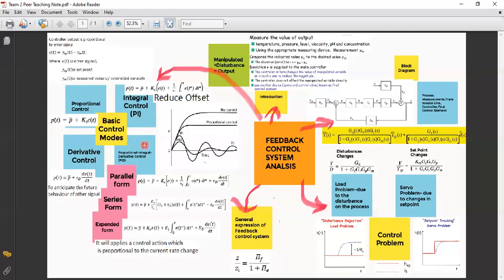Okay, for the proportional control, basically the feedback control is to reduce the error signal to zero. So based on the equation given, ET is the error signal, YSP is a set point, and YM is the measured value of the control variable.